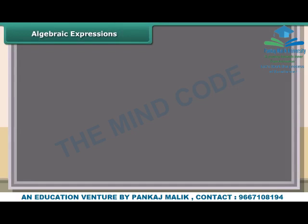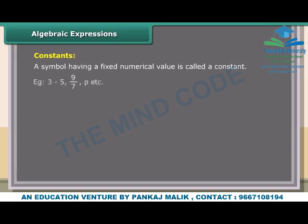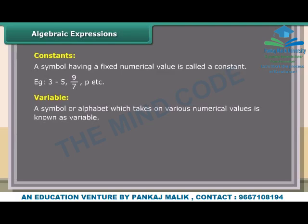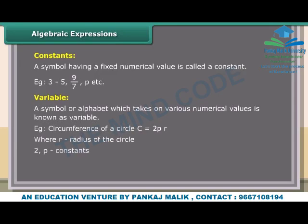Algebraic expressions — Constants: A symbol having a fixed numerical value is called a constant. Examples: 3, −5, 9/7, π, etc. Variable: A symbol or alphabet which takes on various numerical values is known as a variable. Example: the circumference of a circle C = 2πR, where R is the radius. Here 2π are constants and C, R are variables.